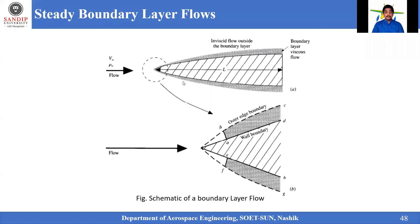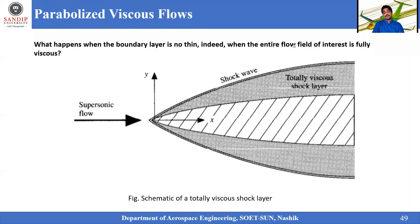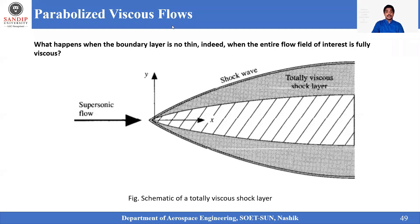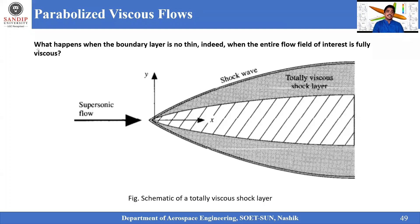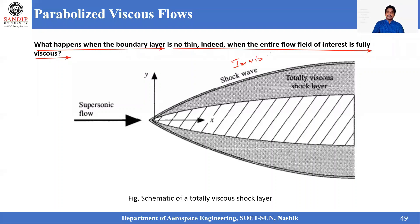This is all about the steady boundary layer flow condition. Now let us see a parabolized viscous flow condition. The question is: what happens when the boundary layer is not thin? In the previous cases we considered a thin shock wave layer attached to the body with the entire flow field attached to it, even assuming completely laminar flow within the boundary layer. Now, what happens when the boundary layer is not thin and the entire flow field of interest is fully dispersed? There is no second layer being considered.